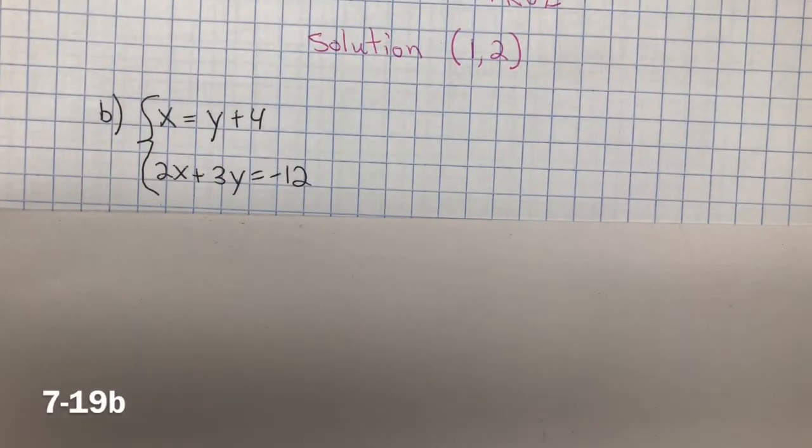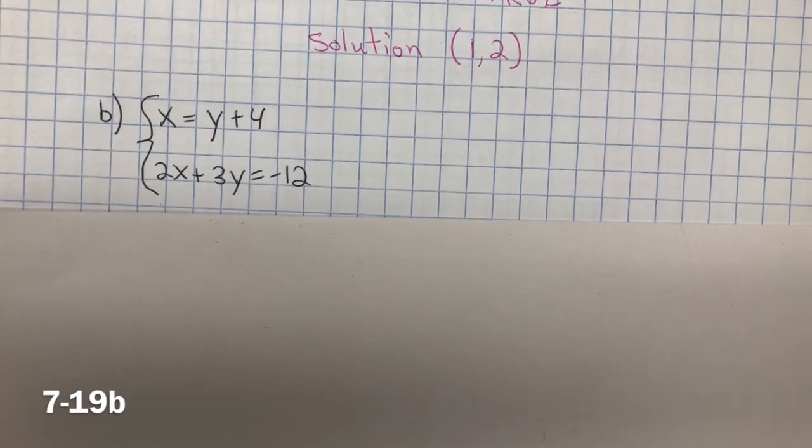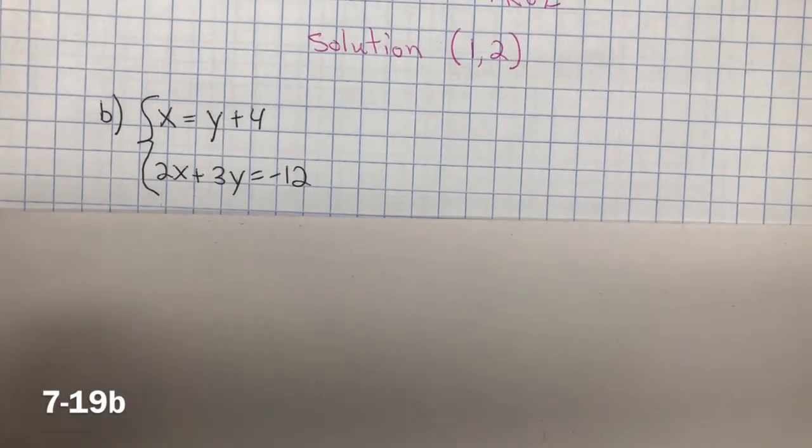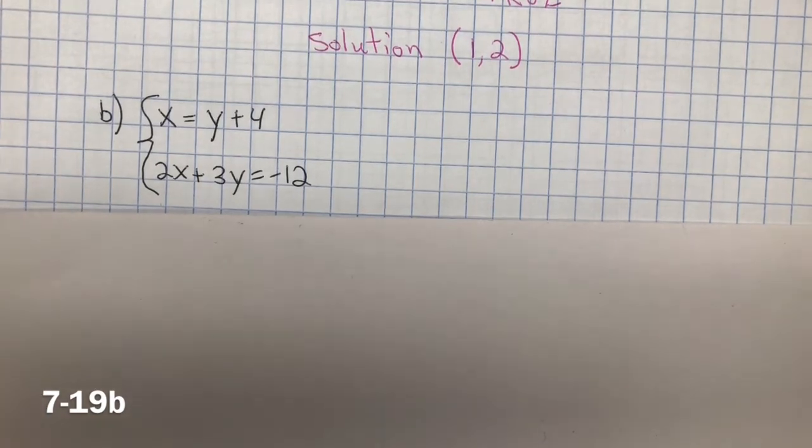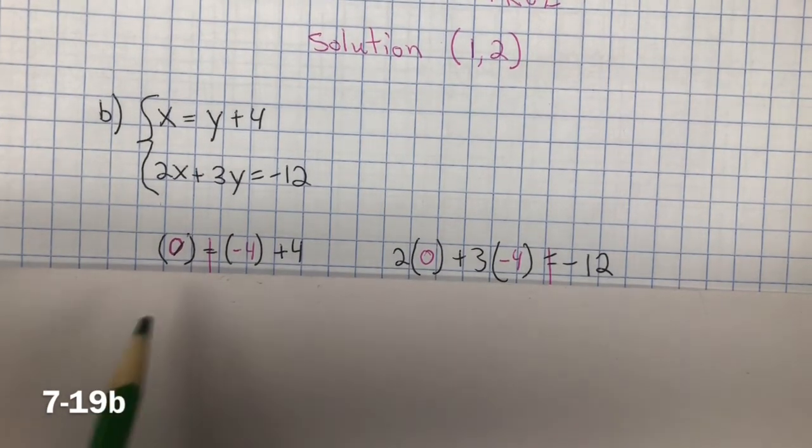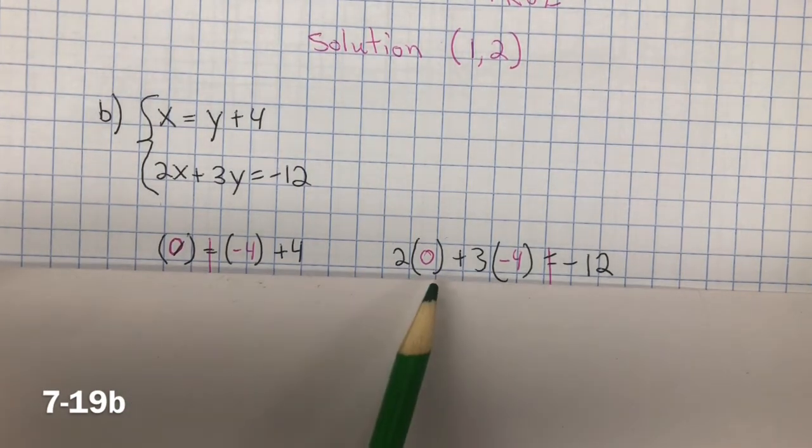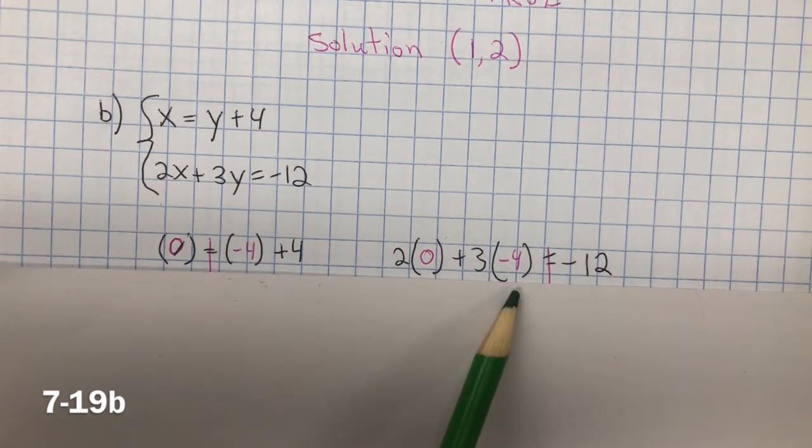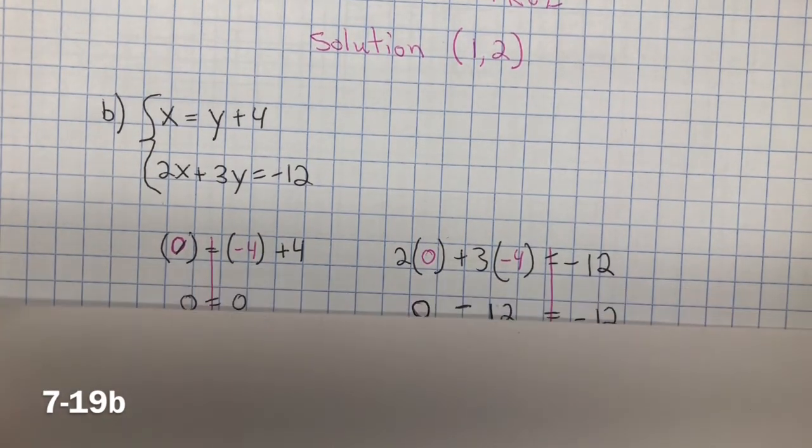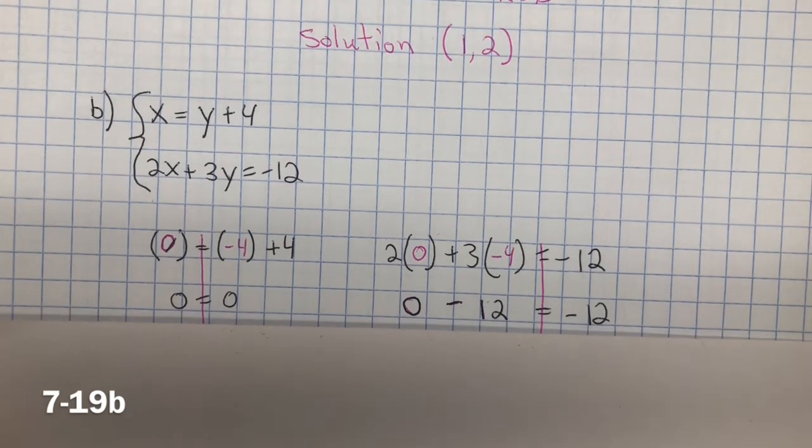Now that I found the solution to one of the equations, I only have two solutions to try, and I'm going to do the same thing. I'm going to substitute one of the solutions into the equation, and I'm going to do 0 and negative 4, and I have to do it to both of the equations.